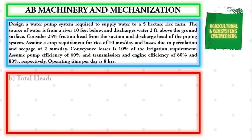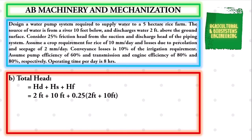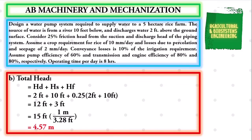The next value to solve is the total head. The formula is: total head = discharge head + suction head + friction head. Substituting: 2 feet + 10 feet + 25% of (2 + 10 feet) = 12 feet + 3 feet = 15 feet. Converting to meters using 1 m = 3.28 feet, the total head is 4.57 meters.